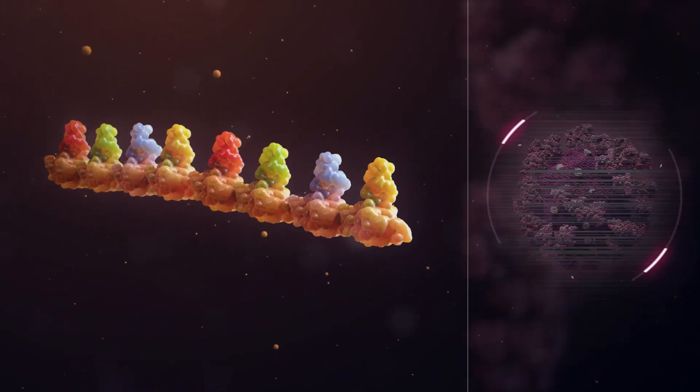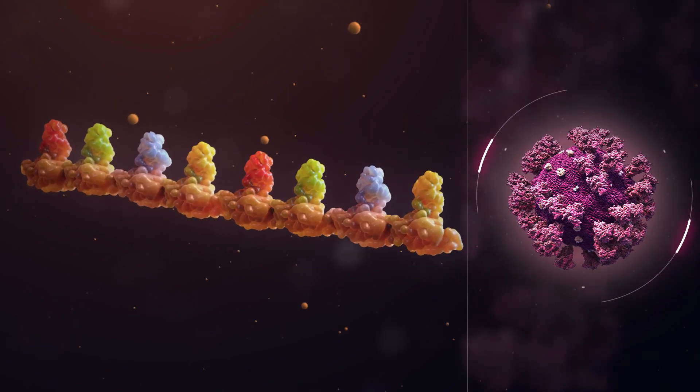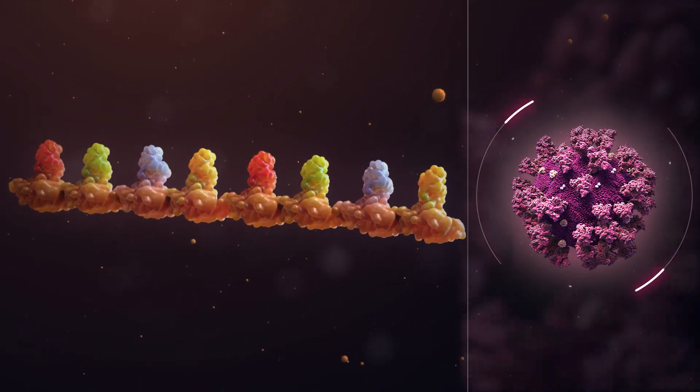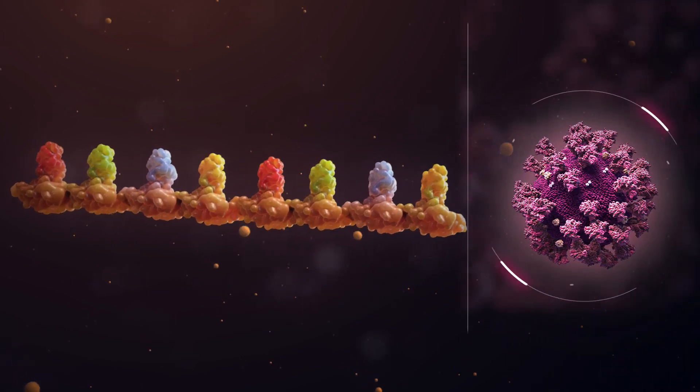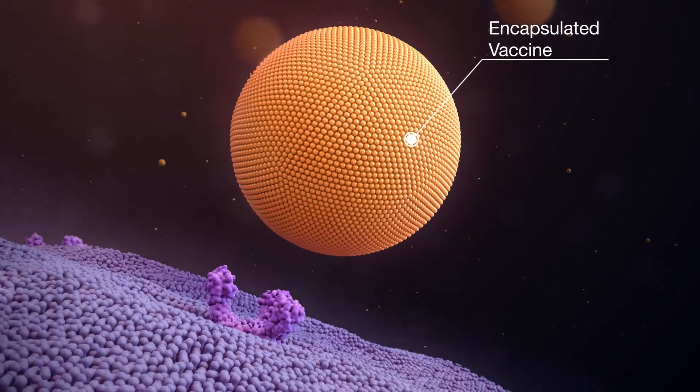Moderna's mRNA vaccine contains the instructions to synthesize the crown-shaped protein spikes on the surface of the SARS-CoV-2 virus. The vaccine is encapsulated into a lipid layer that allows it to enter the cell.